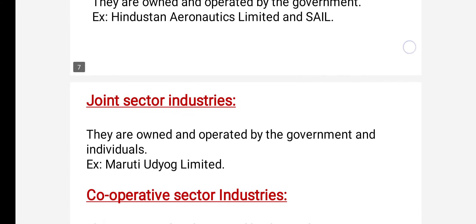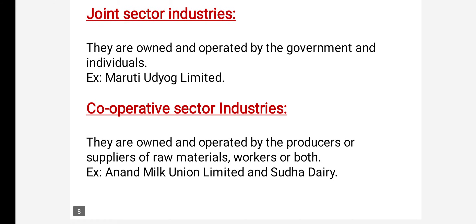Joint sector industries are those which are owned and operated jointly by the government and private individuals. These industries are run jointly by private sector people and the government. Such industries are called joint sector industries. For example, Maruti Udyog Limited is the best example of a joint sector industry.